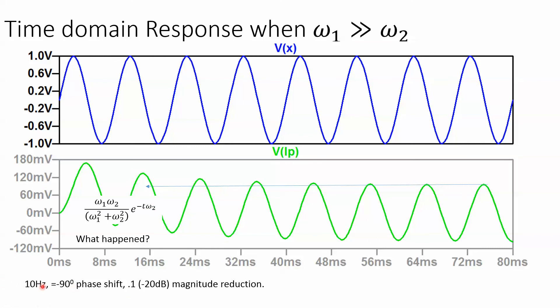And so out here, yep, phase shift would be minus 90. The gain would be reduced to 0.1, which is minus 20 dB.